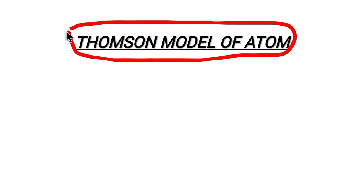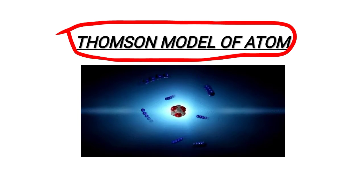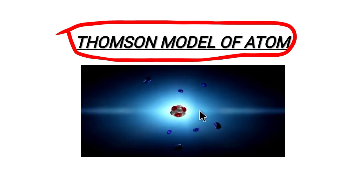J.J. Thompson's first atomic model is the arrangement of electrons, protons, and neutrons in a diagrammatic form. It is a group of atomic models. If you look at this model, you can see the atomic model.